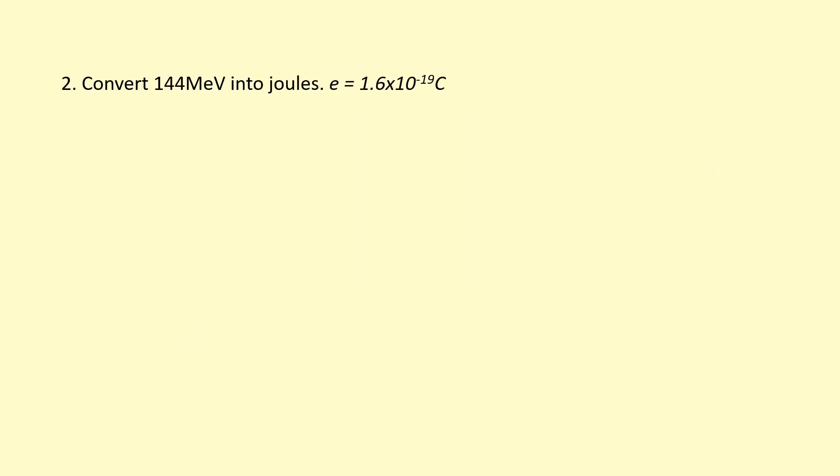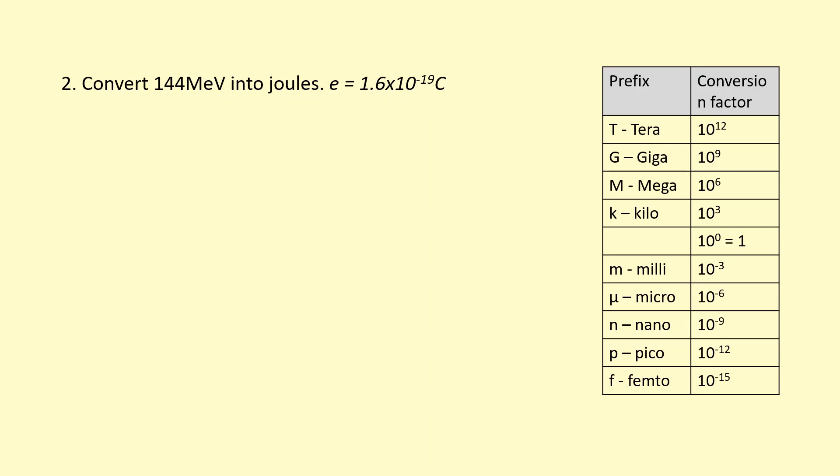Sometimes it's useful to turn the mega electron volts back into joules. Mega is 10^6, so first I'm going to turn the mega electron volts into normal electron volts by multiplying by 10^6, and then to turn it into joules I multiply by 1.6 times 10^-19. That gives me 2.3 times 10^-11 joules.